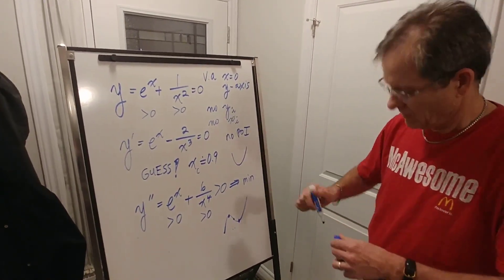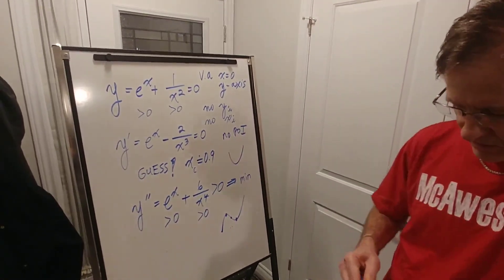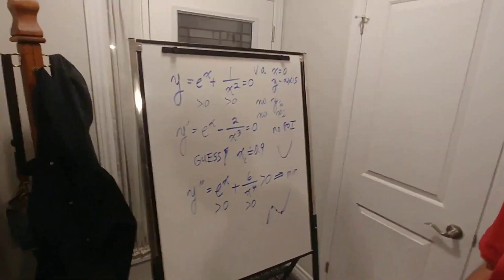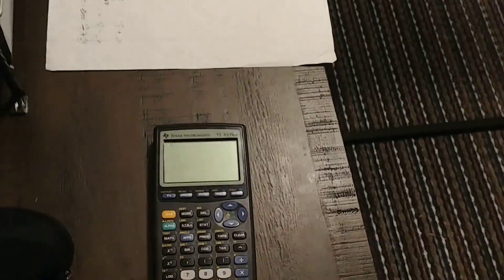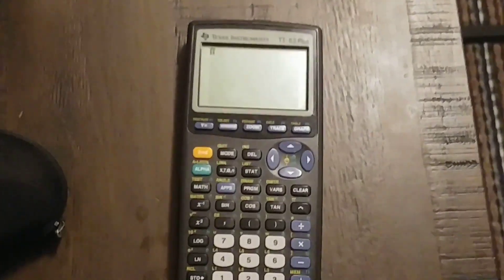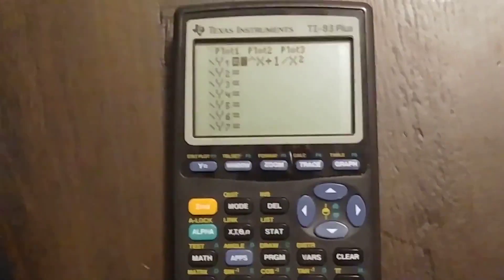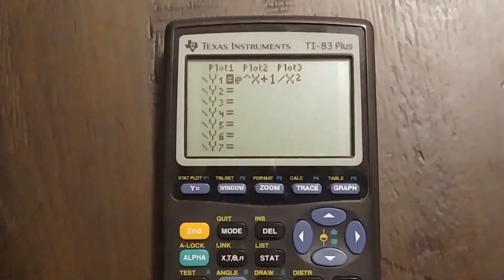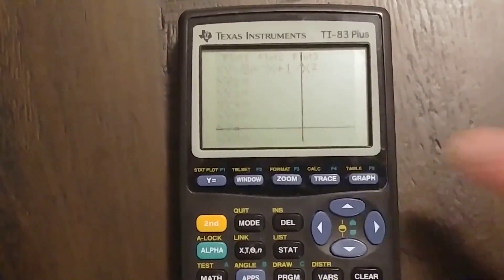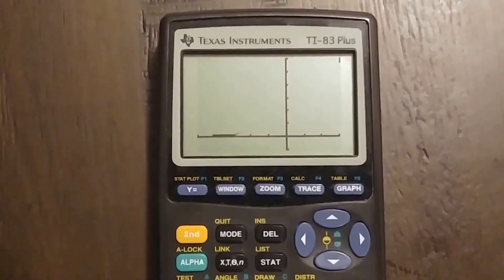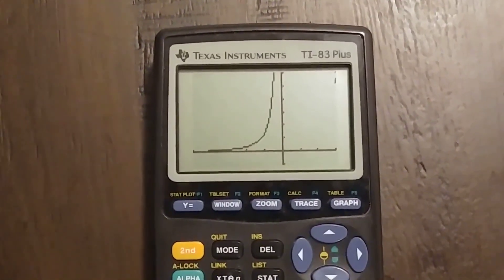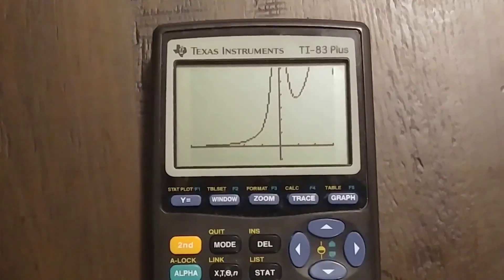So let's analyze this by looking at the graphing calculator to see if everything we said is right. You can see the equation e to the x plus 1 over x squared. If I graph it, it comes up along the x-axis, goes to infinity. There's the minimum.